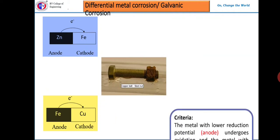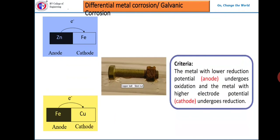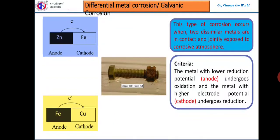The criteria for selecting the anode: metals higher up in the electrochemical series have low reduction potential and undergo oxidation, becoming the anode. The other metal acts as cathode. The reaction at the cathode depends upon the nature of the environment. At the anode, iron undergoes oxidation: Fe gives rise to Fe²⁺. This iron ion combines with hydroxyl ions to give ferrous hydroxide, which later gives rise to ferric oxide — the final corrosion product. This type of corrosion occurs when two or more metals are in contact and jointly exposed to a corrosive environment.